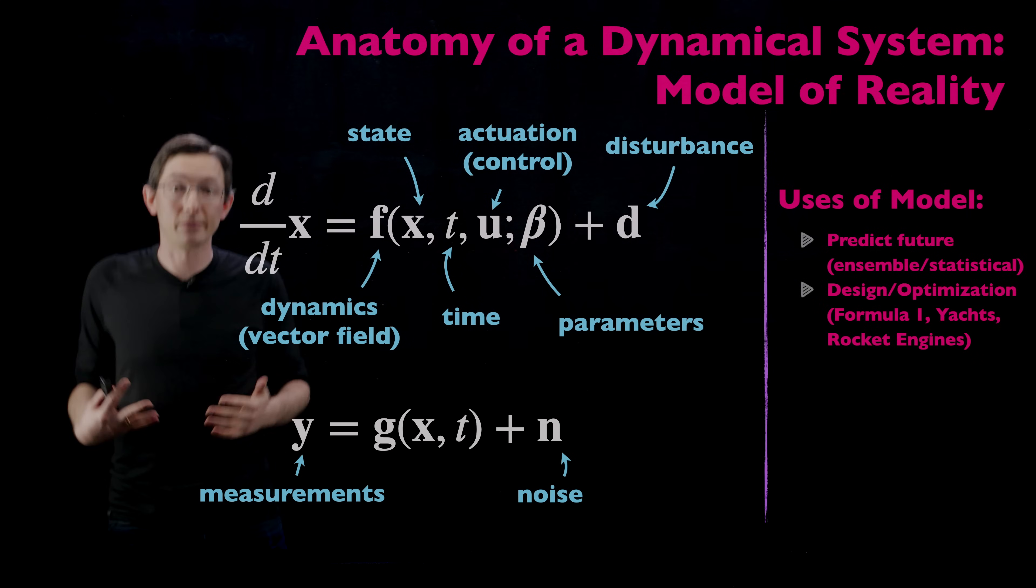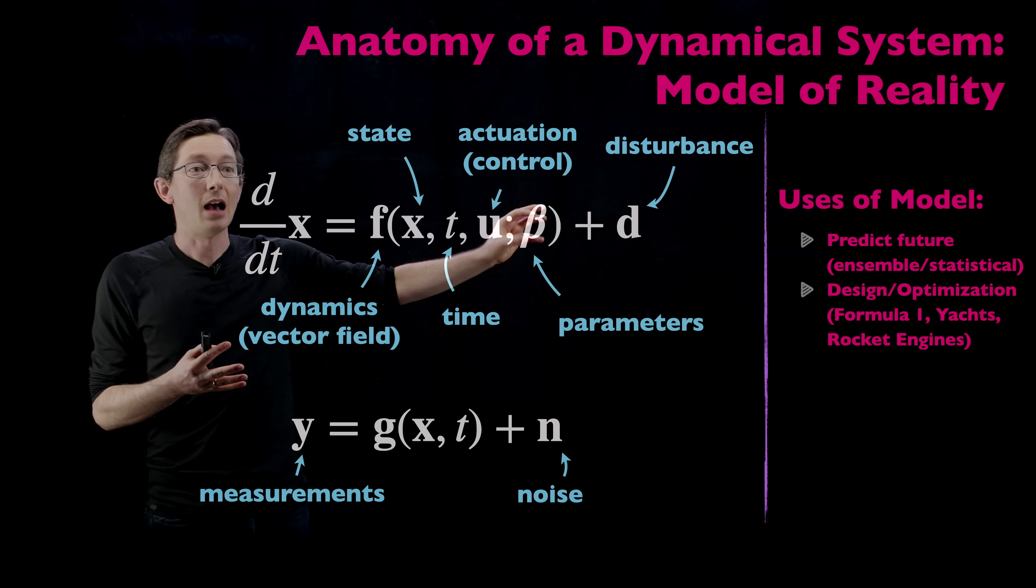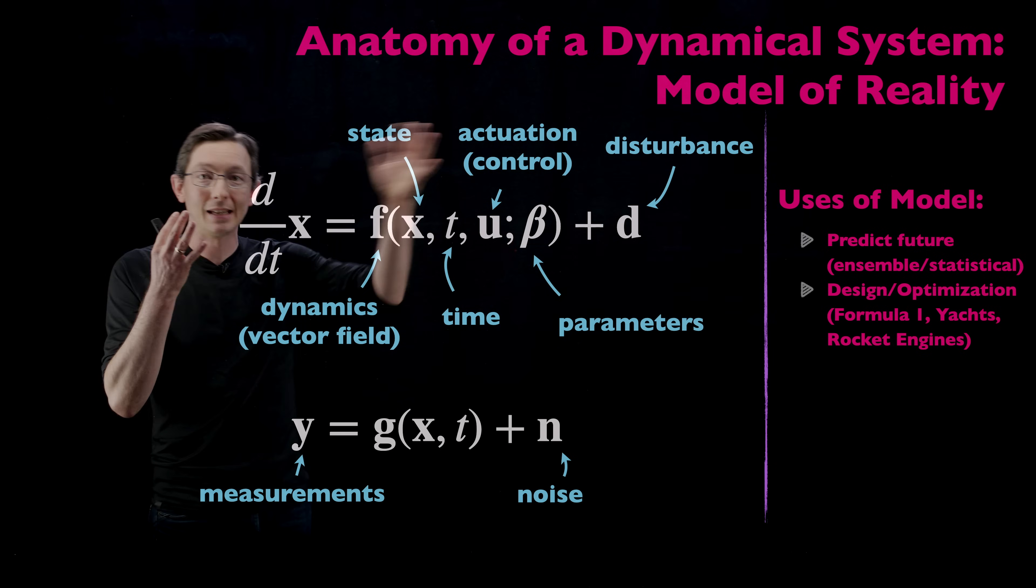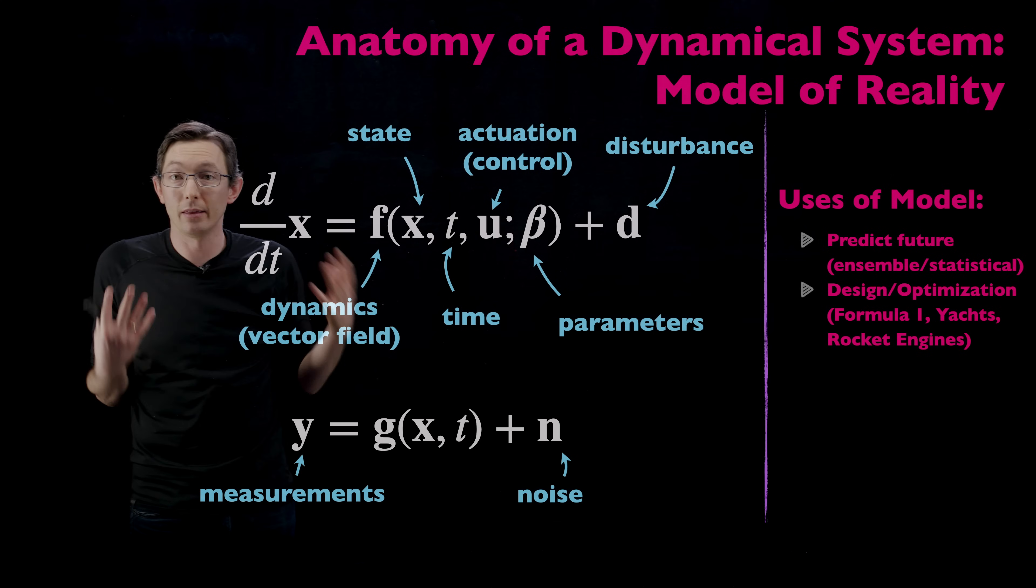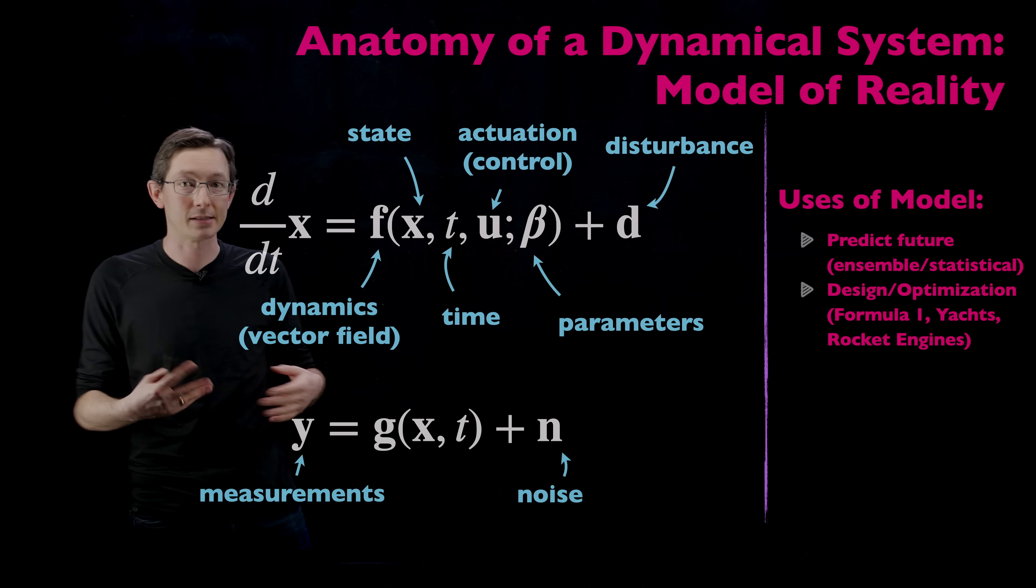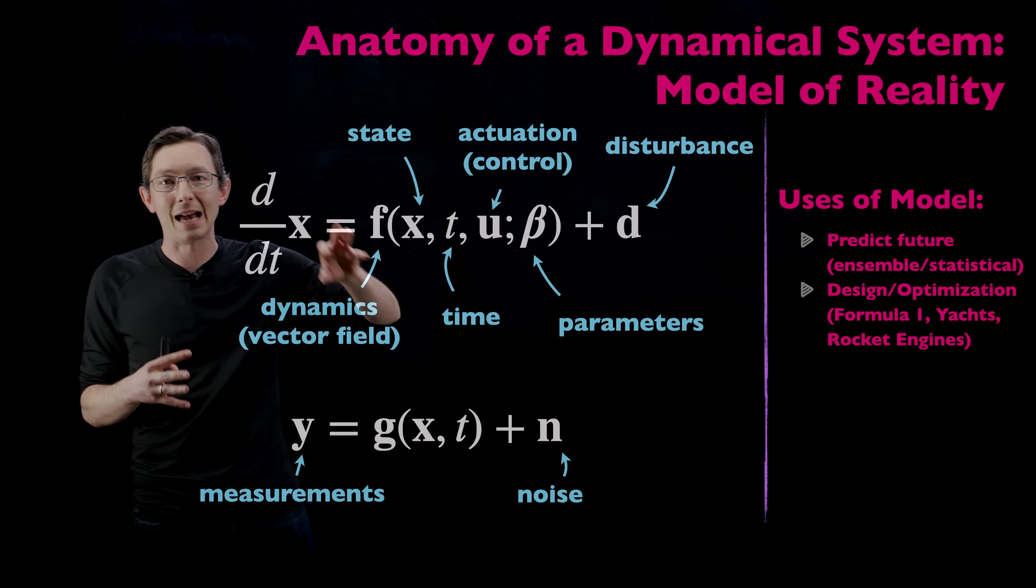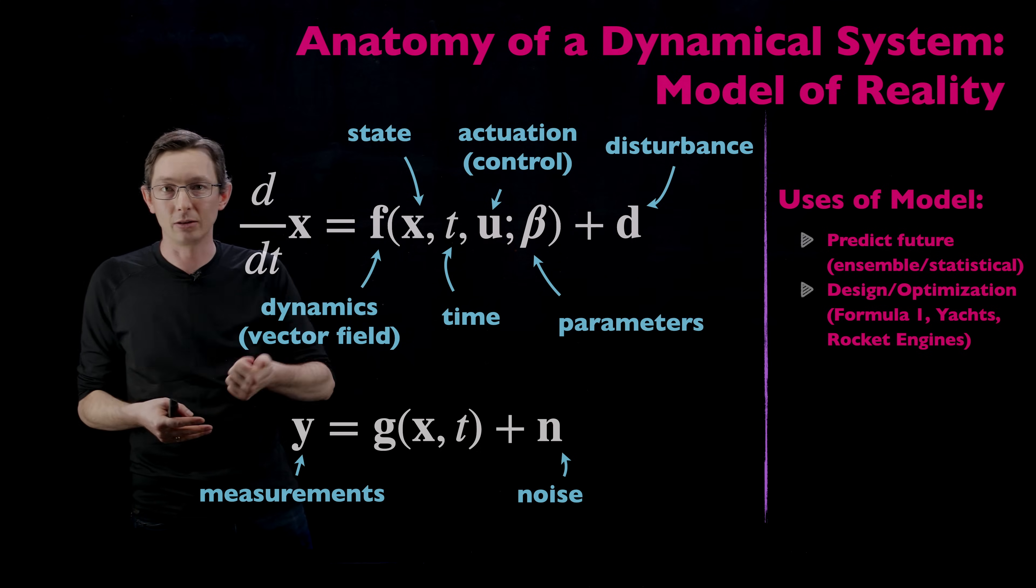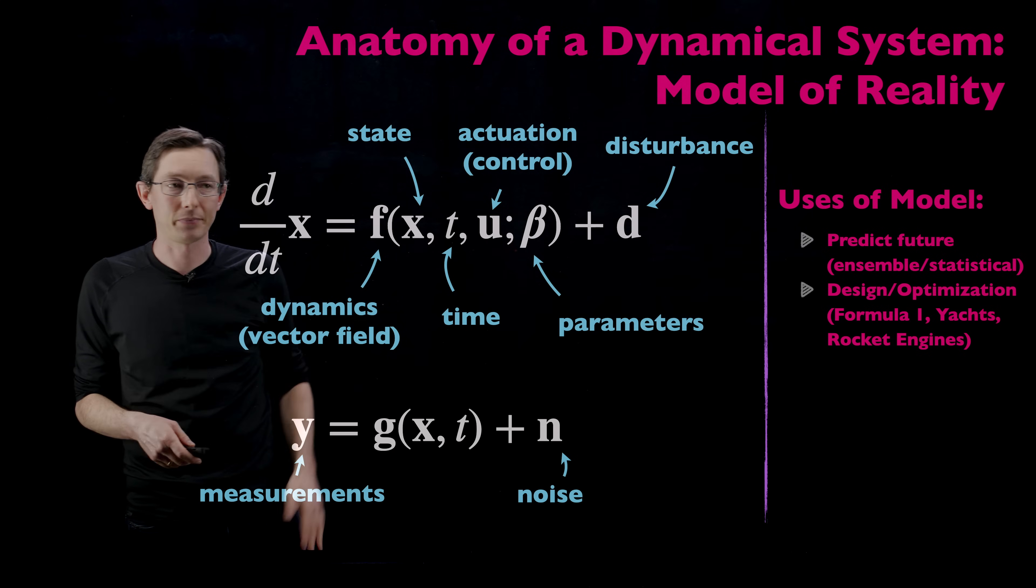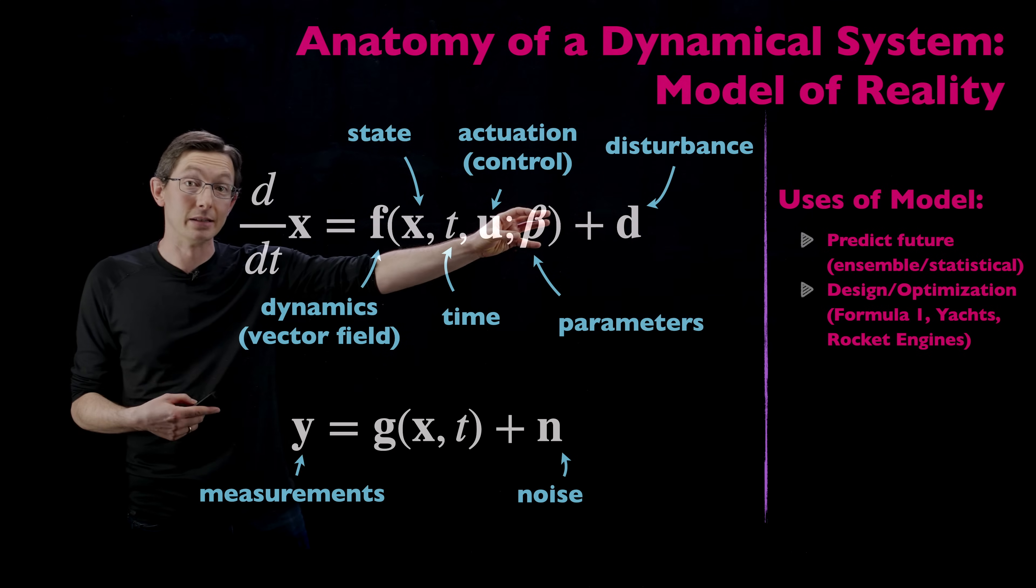Design optimization. That's another big use of dynamical systems models. Now that I have a model of my system I might want to design betas to get a performance or an output that is desirable. Think Formula One cars or super yachts or rocket engines. I want to design the parameters of my system to get some desired high level output like drag and lift and things like that. And so that requires you to be able to understand how your system depends on these parameters.